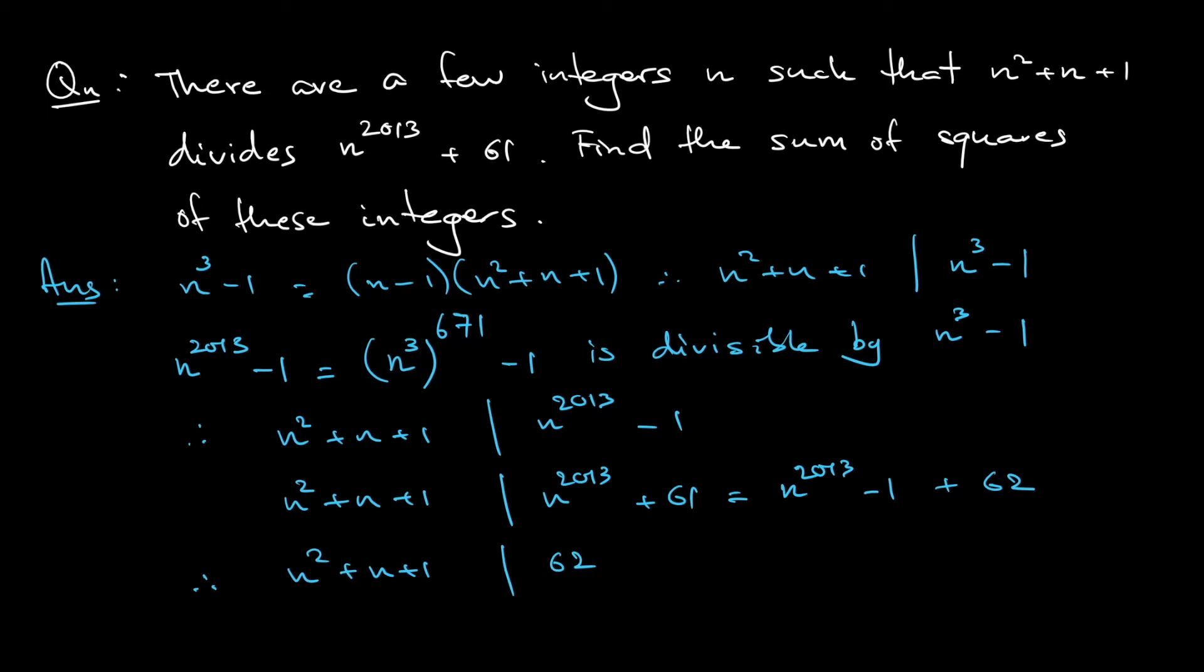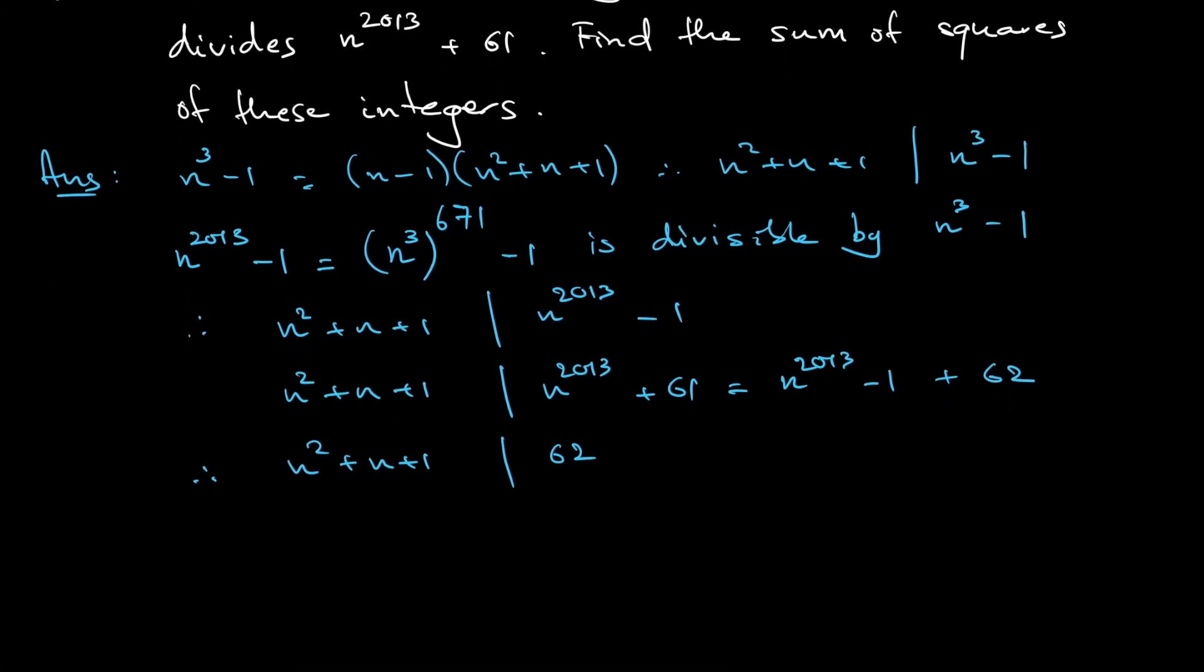Okay, so, you can check, right? This, the discriminant is negative, so this value must be positive, alright? So, just need to check that n² + n + 1 is a positive factor of 62.